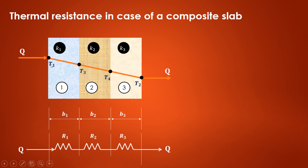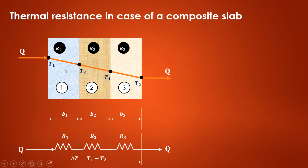The temperature at one face is T1 and at the other face it is T2. Since T1 is greater than T2, the heat flow is taking place from higher temperature towards lower temperature, giving a negative slope. T3 and T4 are the interface temperatures that we also have to find out afterwards.